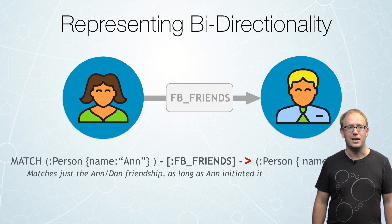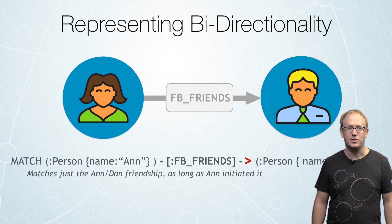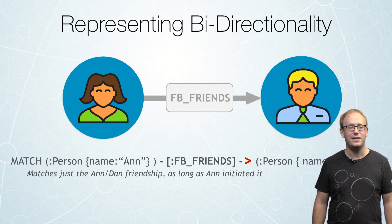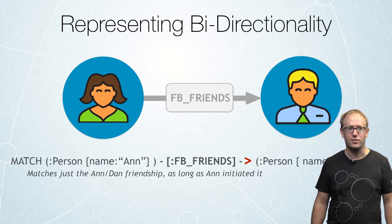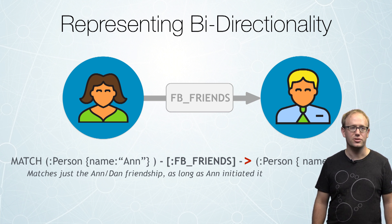And you can notice here that Cypher uses what we call ASCII art for graphs. You're literally drawing the pattern of the graph in your query through ASCII characters like the greater than symbol.